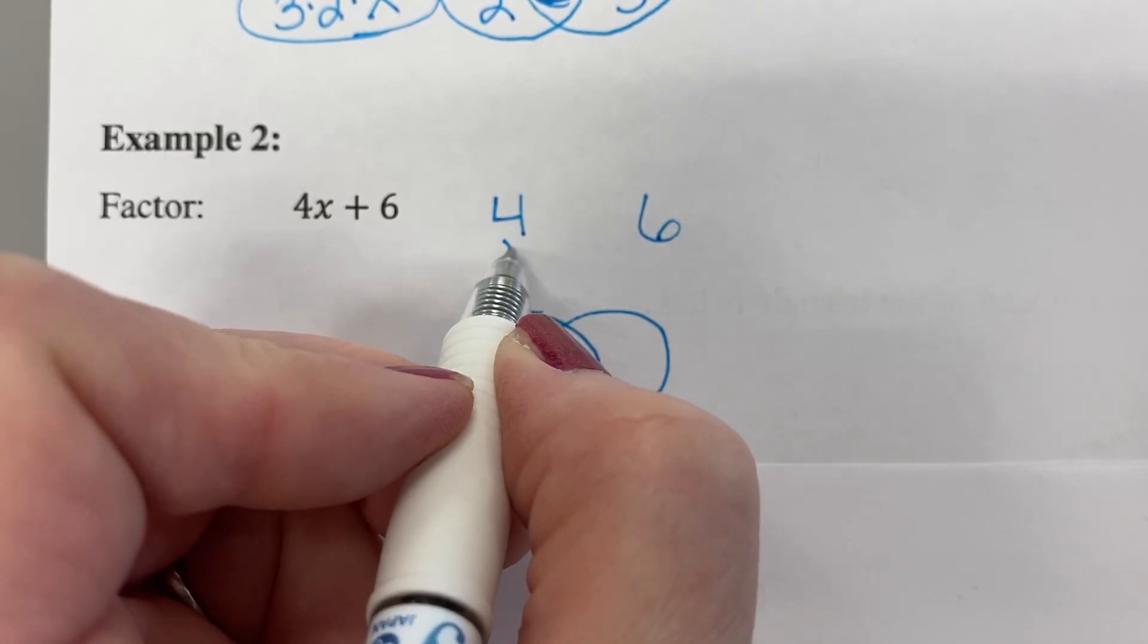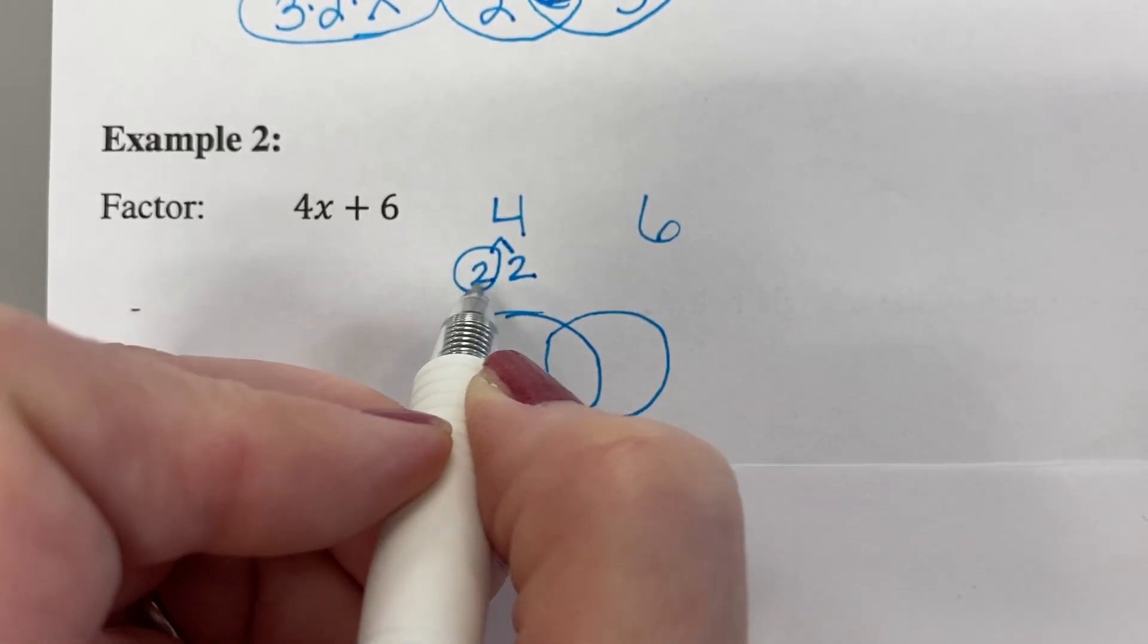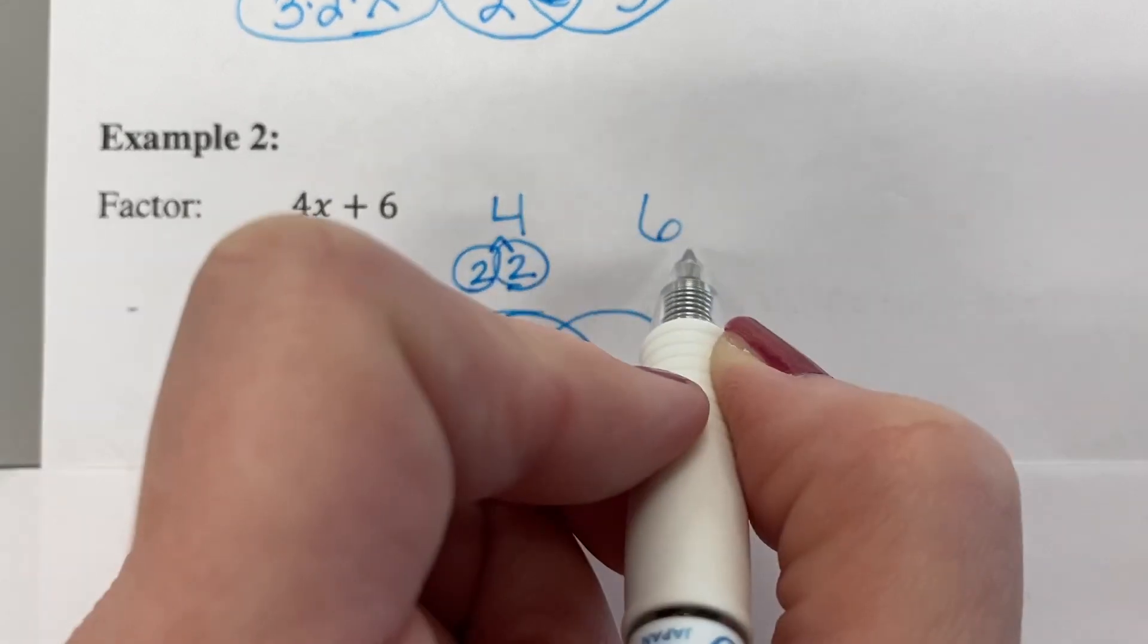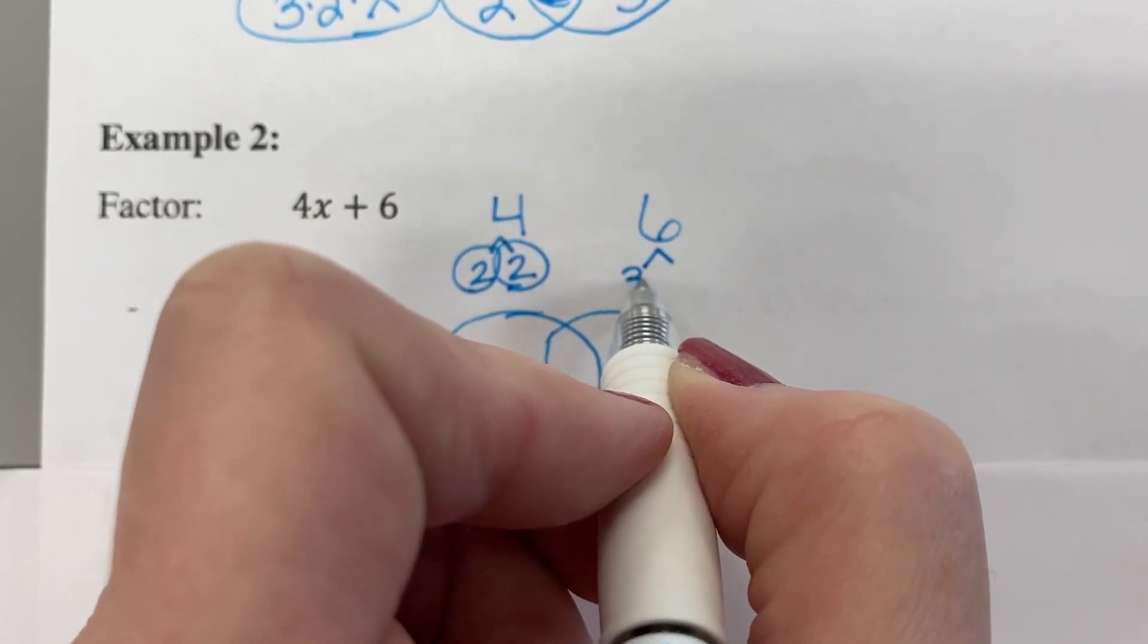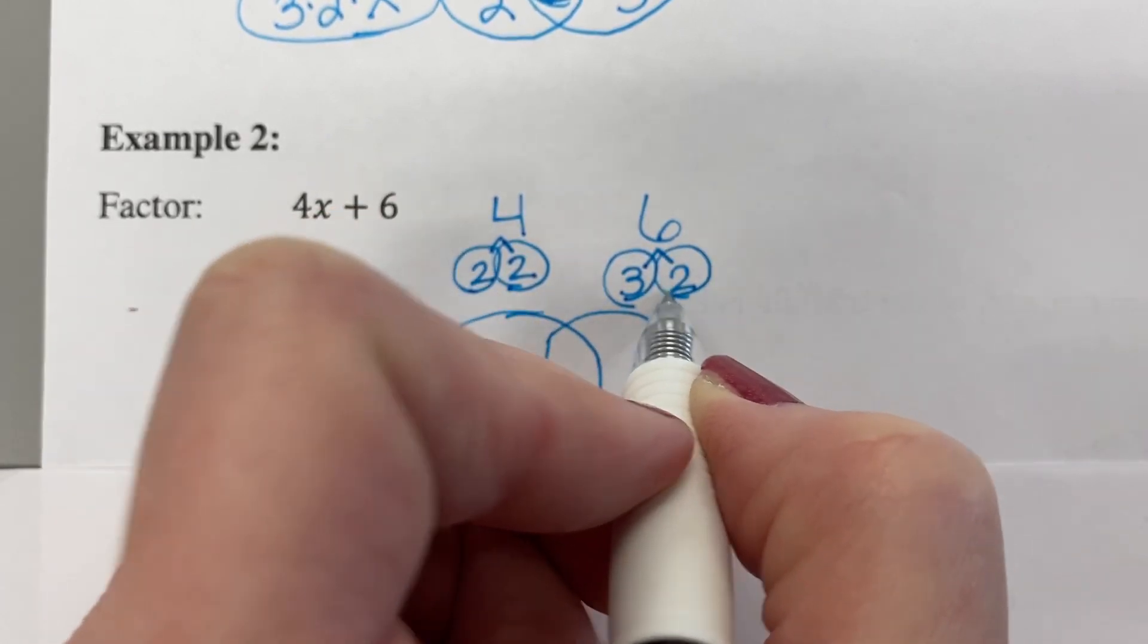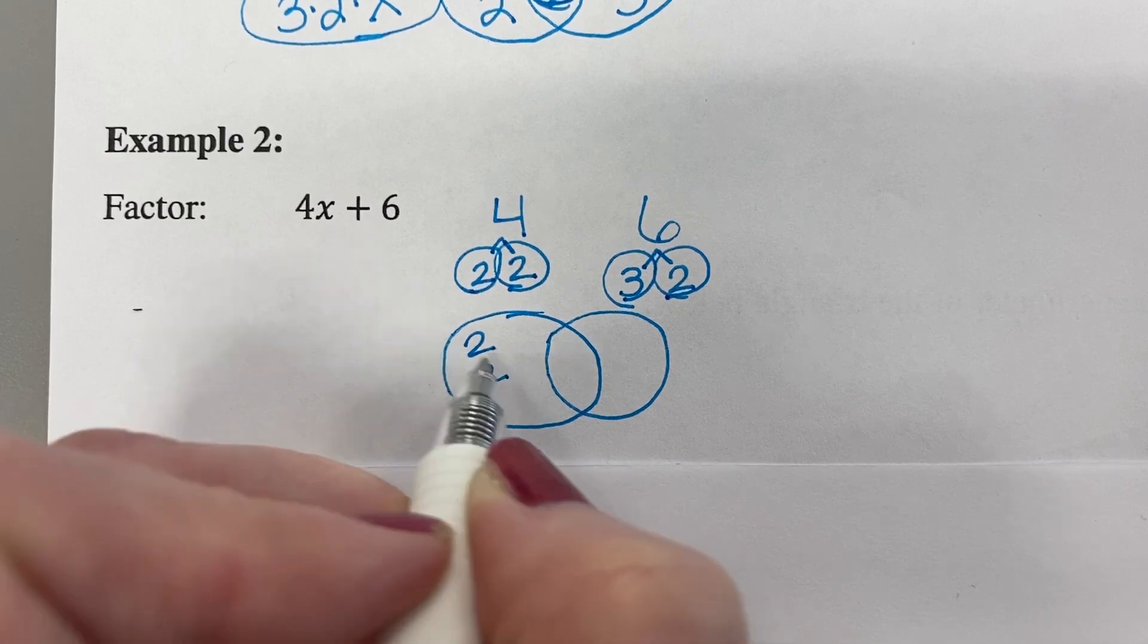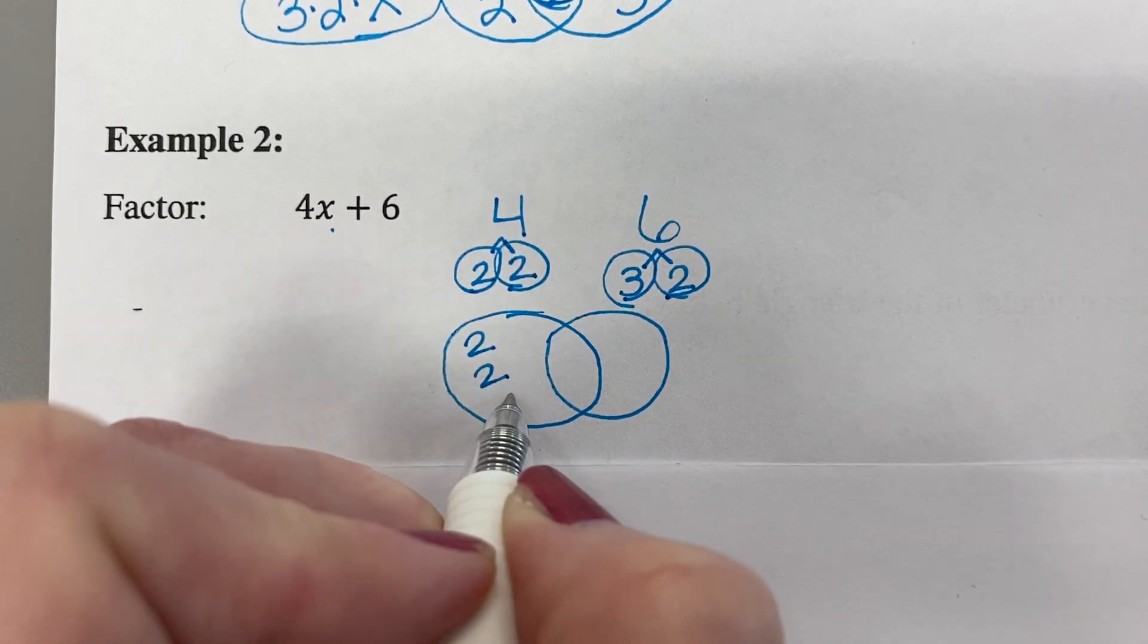So let's break our 4 down. We have a 2 and a 2, which are both prime. So I'll circle them. And for 6, we have 3 and 2. And they're both prime. So in this side of the circle, we'll have a 2, a 2, and right here, let's put that x there. 2 times 2 times x is going to give me back 4x.